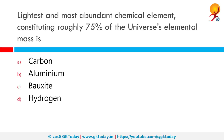The lightest and most abundant chemical element, constituting roughly 75% of the universe's elemental mass, is hydrogen. Hydrogen is the most abundant element in the universe, accounting for about 75% of its normal matter created in the Big Bang. Helium is the element next to hydrogen in the periodic table and is also abundant; however, hydrogen is the most abundant element in the universe.